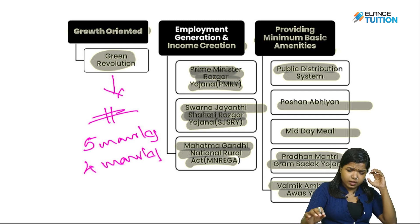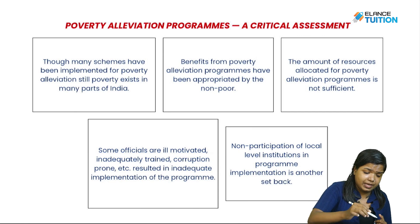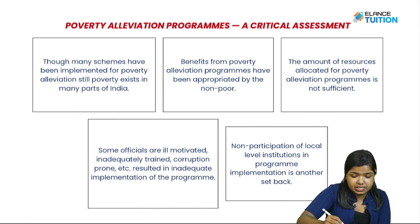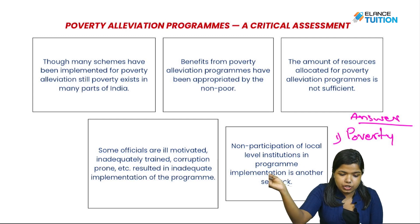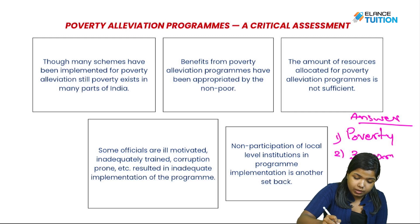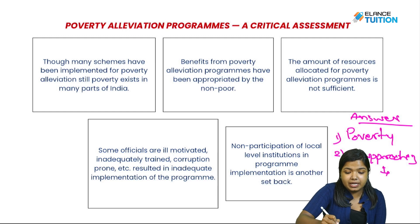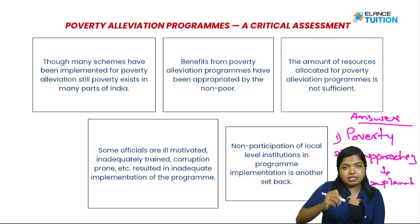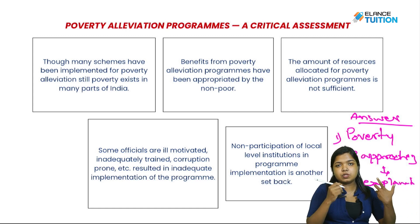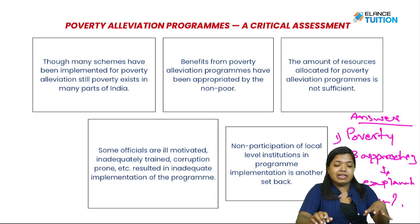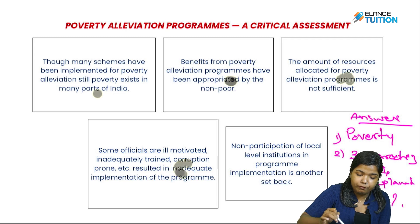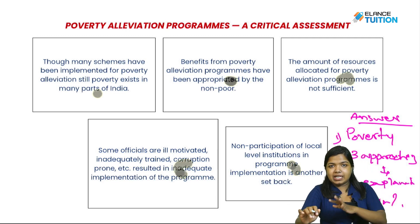I will tell you how to write the answer for the first question. First, you need to introduce poverty. Then, mention the three approaches adopted by the government. Include growth oriented approach, employment generation and income creation, and providing minimum basic amenities — one by one. Then write the critical assessment. You will conclude with 5 points from the poverty alleviation program to secure the 8 marks.